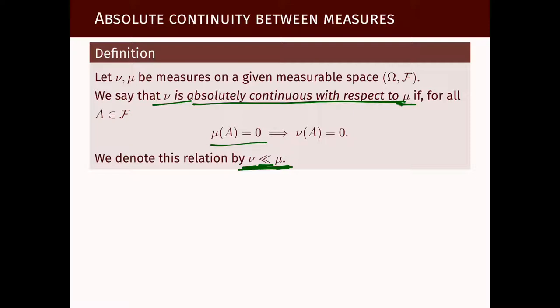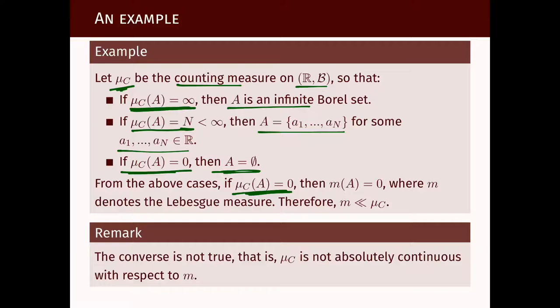when one measure being zero always implies that another measure is zero, we say this other measure is absolutely continuous with respect to the first one. So what we just showed: whenever μ_C(A) = 0, it implies m(A) = 0. Therefore, m ≪ μ_C.